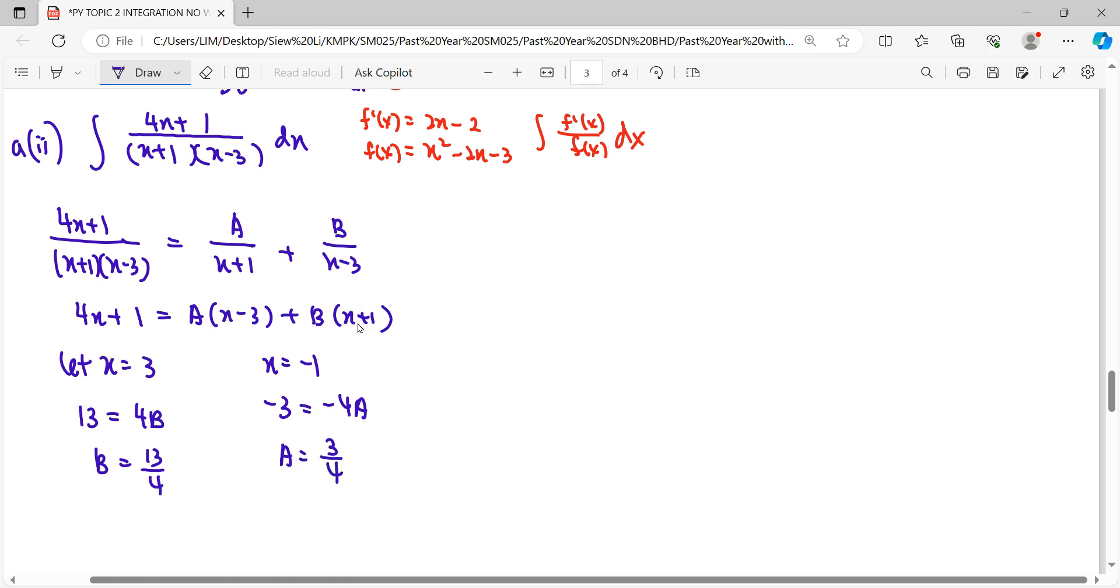Therefore, we write our partial fraction first before we start integrating. A, which is 3, denominator 4 together with x plus 1. Meanwhile, B is 13, denominator 4 also, together with the denominator x minus 3. Then only we start to integrate this partial fraction.